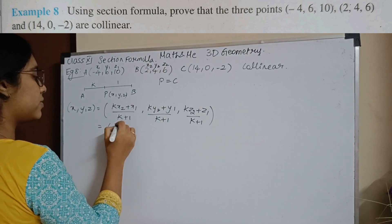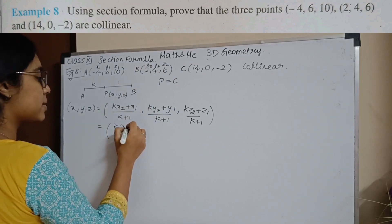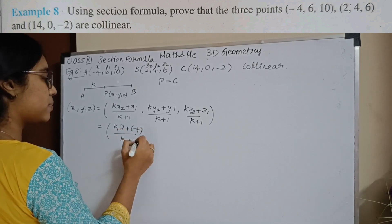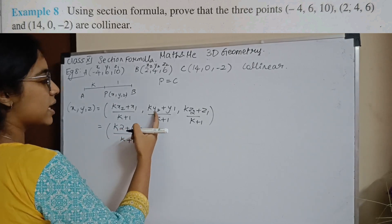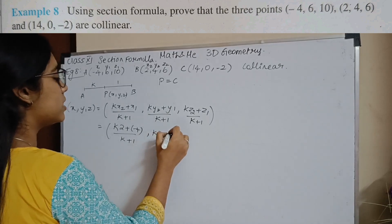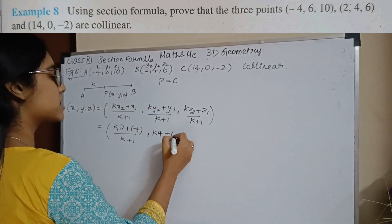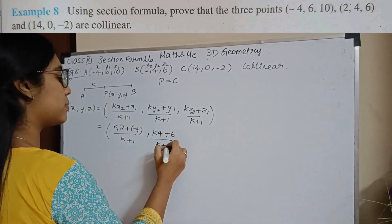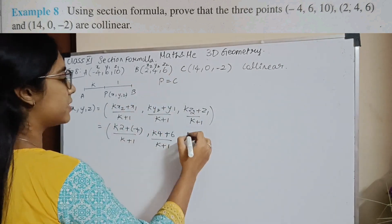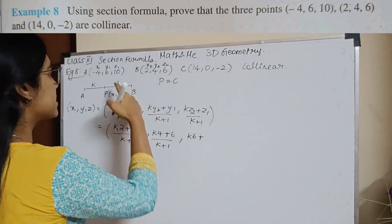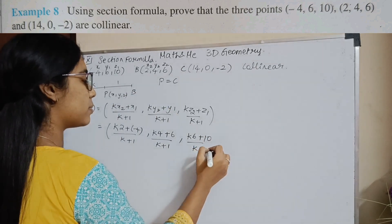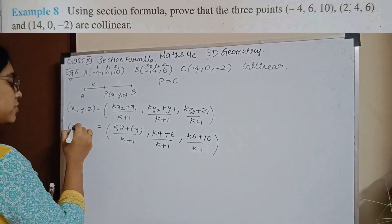Substituting the formula, I will have K times X2 plus X1 which is minus 4, divided by K plus 1; K times Y2 which is 4, plus Y1 which is 6, divided by K plus 1; K times Z2 which is 6, plus Z1 which is 10, divided by K plus 1. So these are my coordinates of P.